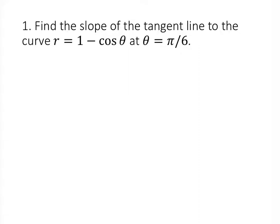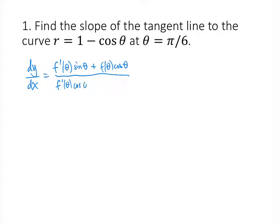For this one, we need to know the formula for the slope of the tangent line to a polar curve, which is that dy/dx equals f prime of theta times sine of theta plus f of theta times cosine of theta, all divided by f prime of theta times cosine of theta minus f of theta times sine of theta.